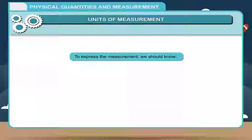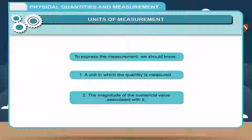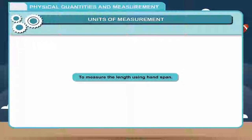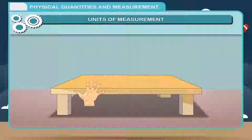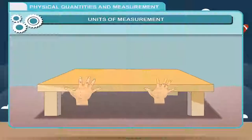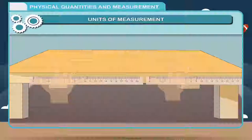To express a measurement, we should know: 1. A unit in which the quantity is measured, and 2. The magnitude of the numerical value associated with it. Activity: To measure the length using hand span — use your hand span to measure the length of the table, then ask your friend to use his hand span to measure the same length. You will notice that there is a difference between the two measurements. Therefore, for reliable and accurate measurement, we need standard units of measurement.